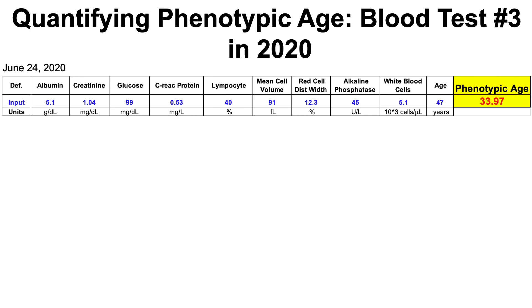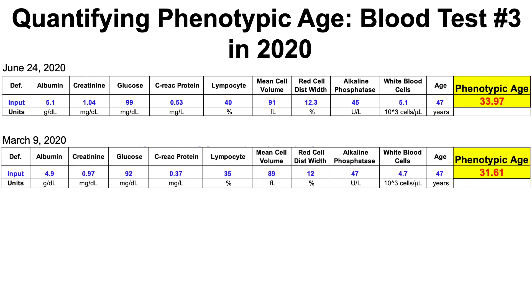With that collection of variables, my phenotypic age comes out to about 34 years, which isn't bad considering my chronological age is 47 — so I'm about 13 years younger biologically. One blood test is nice, but as this slide shows, I've also measured my phenotypic age two other times during the year so we can get a more complete picture of my aging processes.